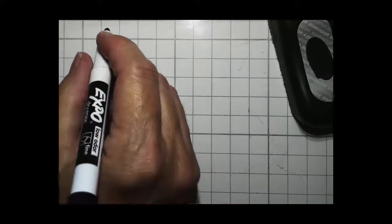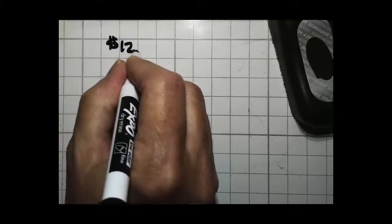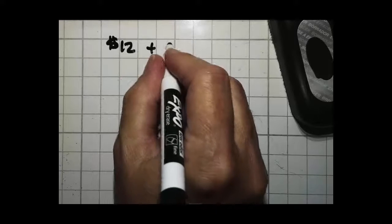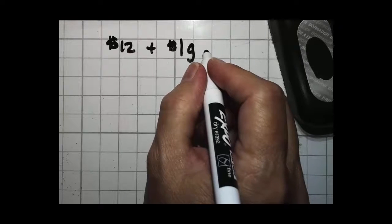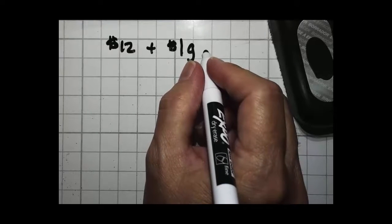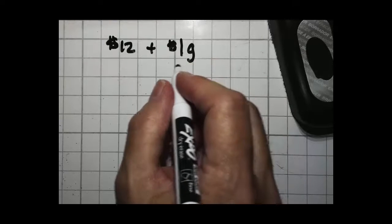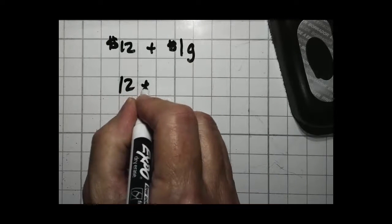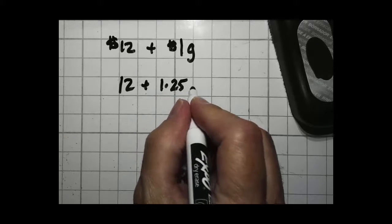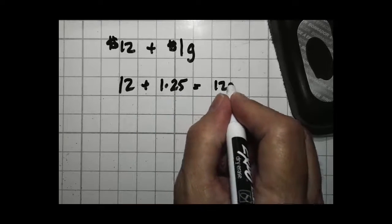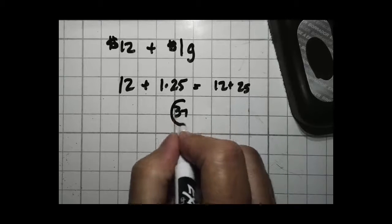Next problem. Justin's birthday party costs $12 plus an additional $1 for each guest. $1 per guest. We're going to make G mean guests. If there are 25 guests, how much will the party cost? Okay, so we have 12 to start out with plus $1 times 25 guests. That's 12 plus 25, which means this whole party, pretty cheap party, is going to be $37.